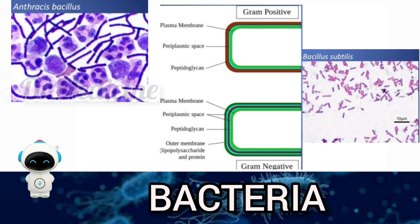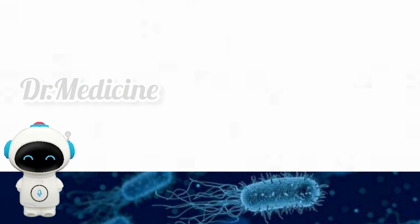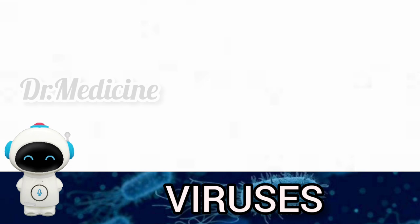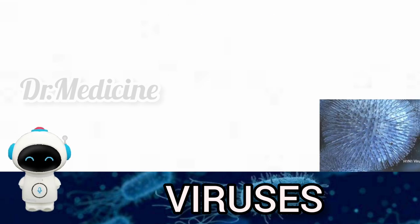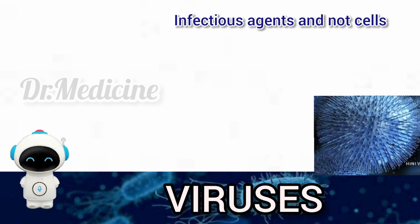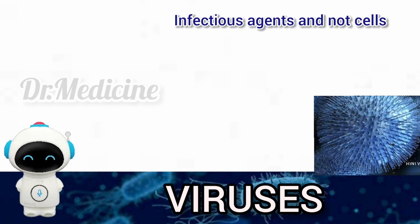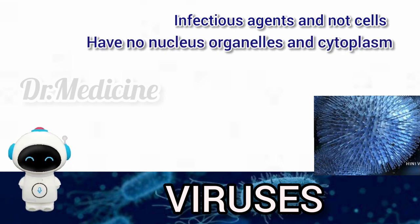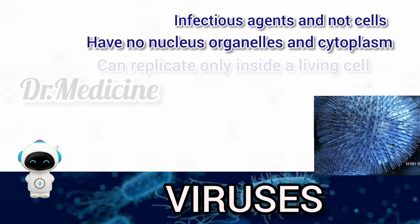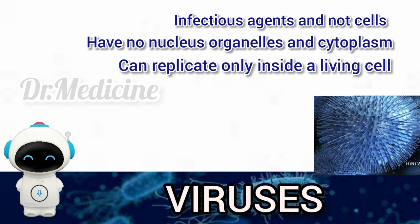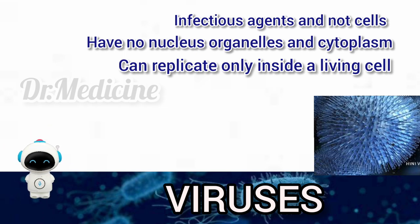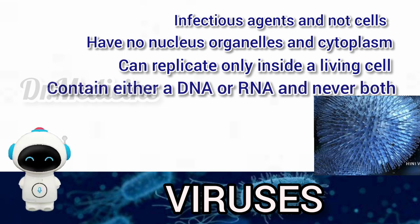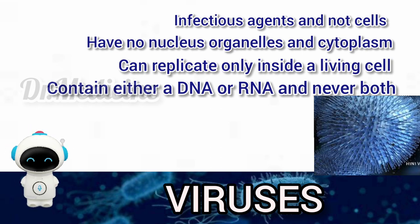These are the overall information about bacteria. Now let's see about the virus. What is a virus? These are infectious agents, not cells. They have no nucleus, organelles, or cytoplasm. They can replicate only inside a living cell. They contain only one type of genetic molecule — either DNA or RNA.